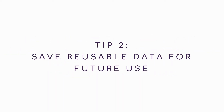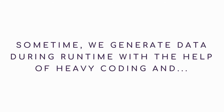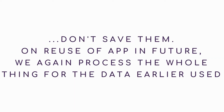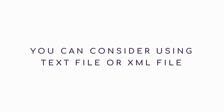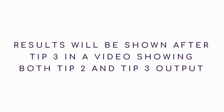Tip 2: Save reusable data for future use. Sometimes we generate data during runtime with heavy coding and don't save it. On reuse of the app in future, we again process the whole thing for data used earlier. It's always better to save data generated by the application during runtime which can be used in future. You can consider using a text file or XML file.